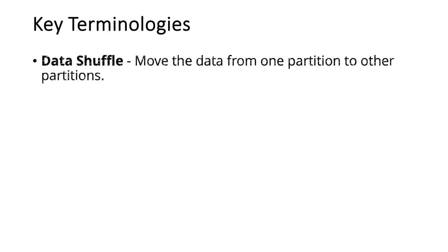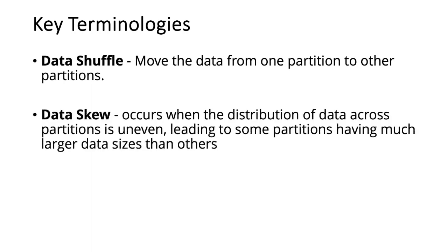Now let's see some of the key terminologies that we use when dealing with partitions. The first terminology is data shuffle. Data shuffle is nothing but moving the data from one partition to another partition. Next, data skewness occurs when the distribution of data across the partitions is uneven, leading to some partitions having a larger data size than others.